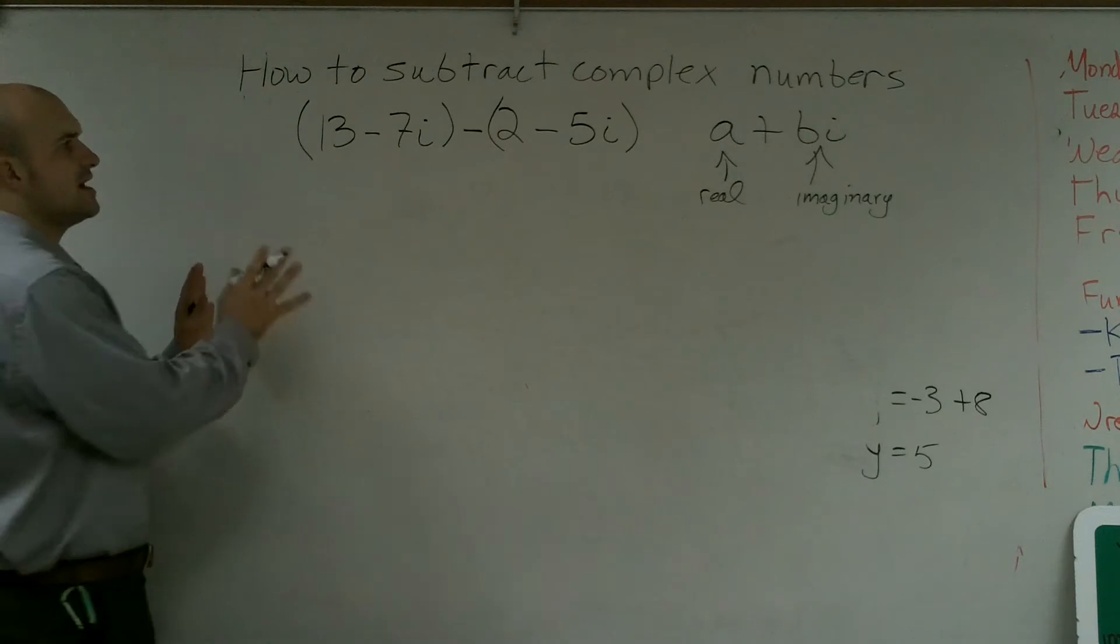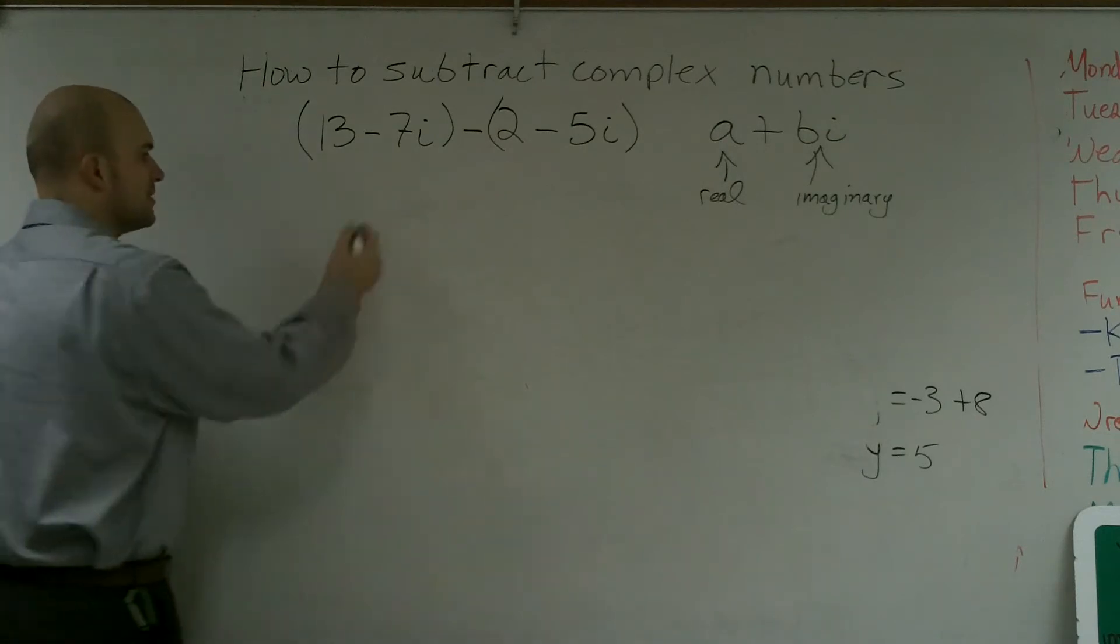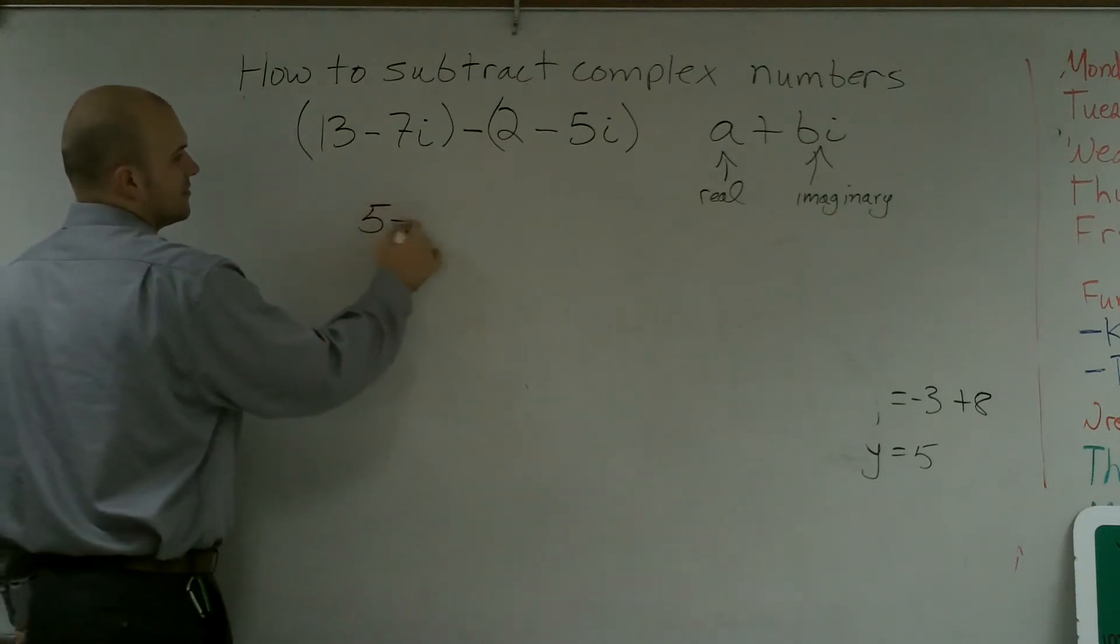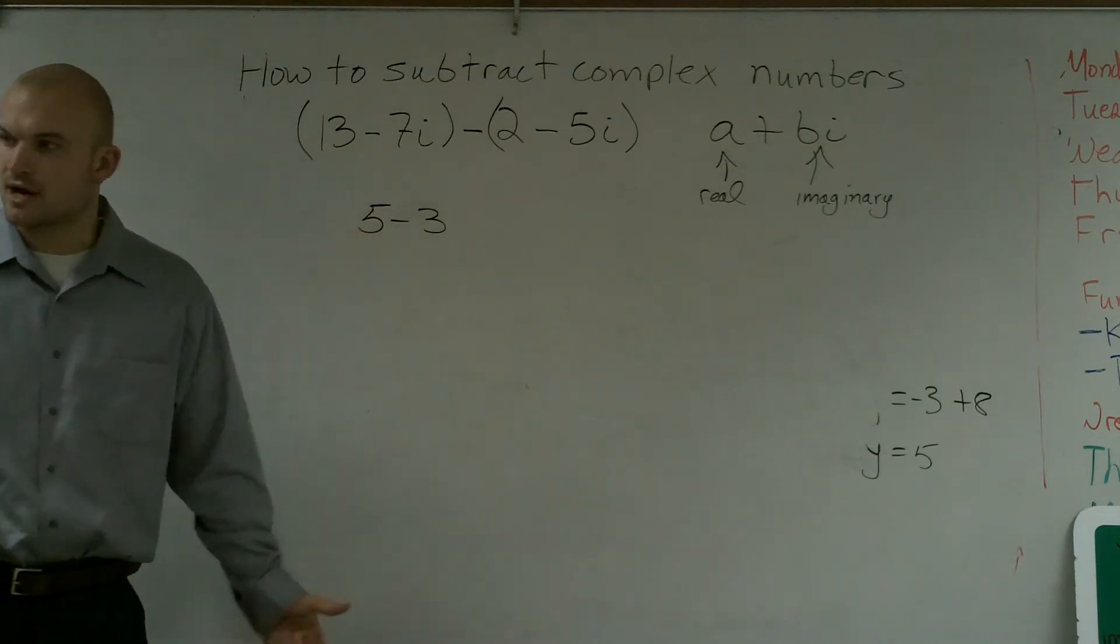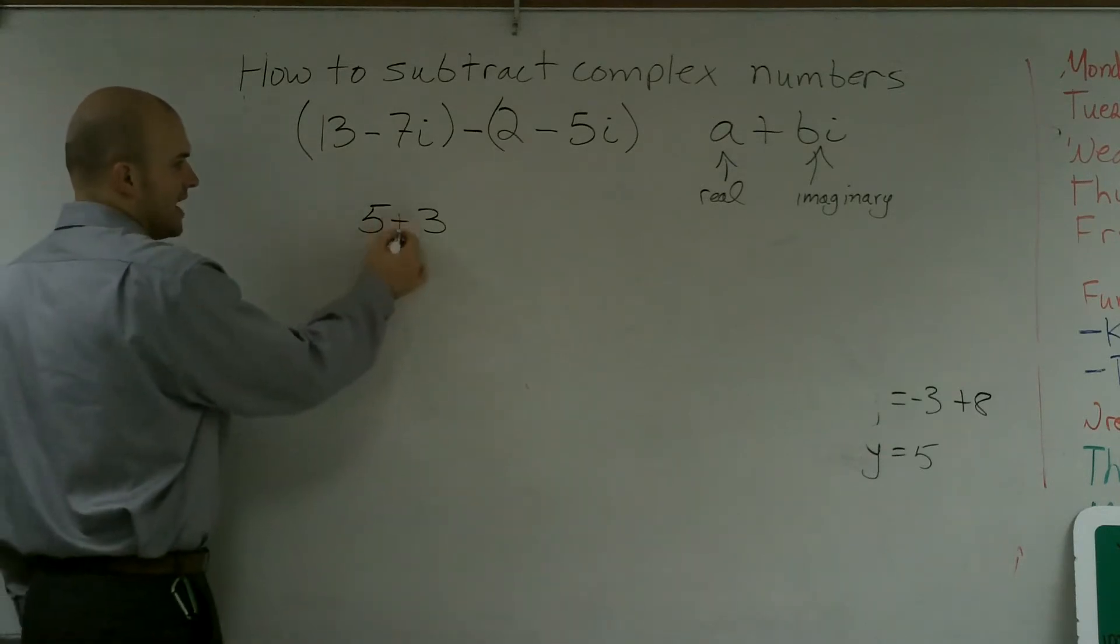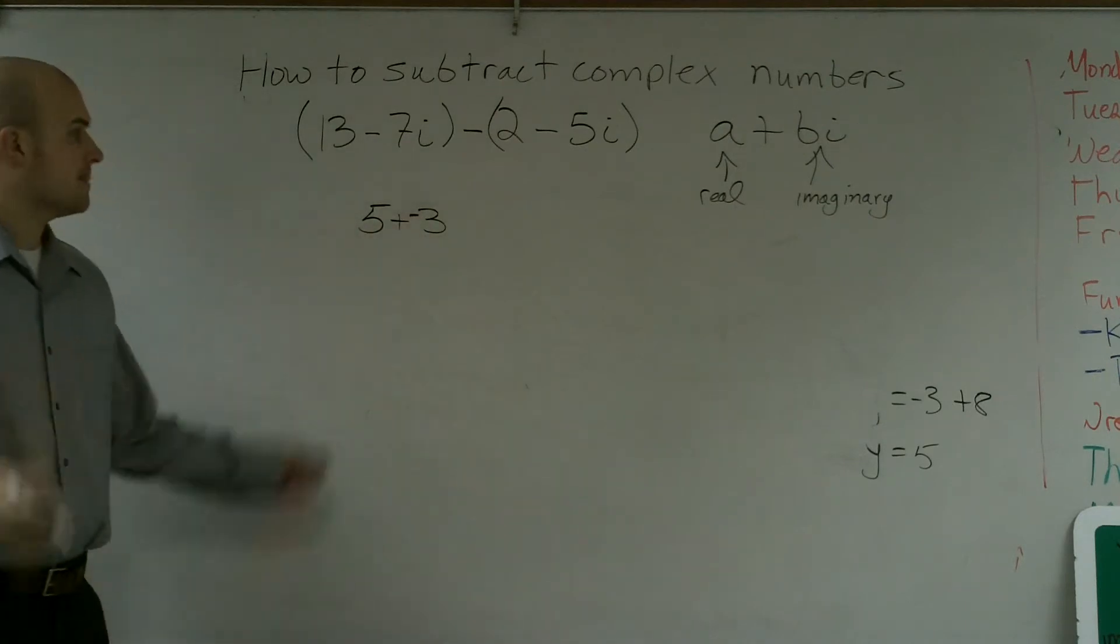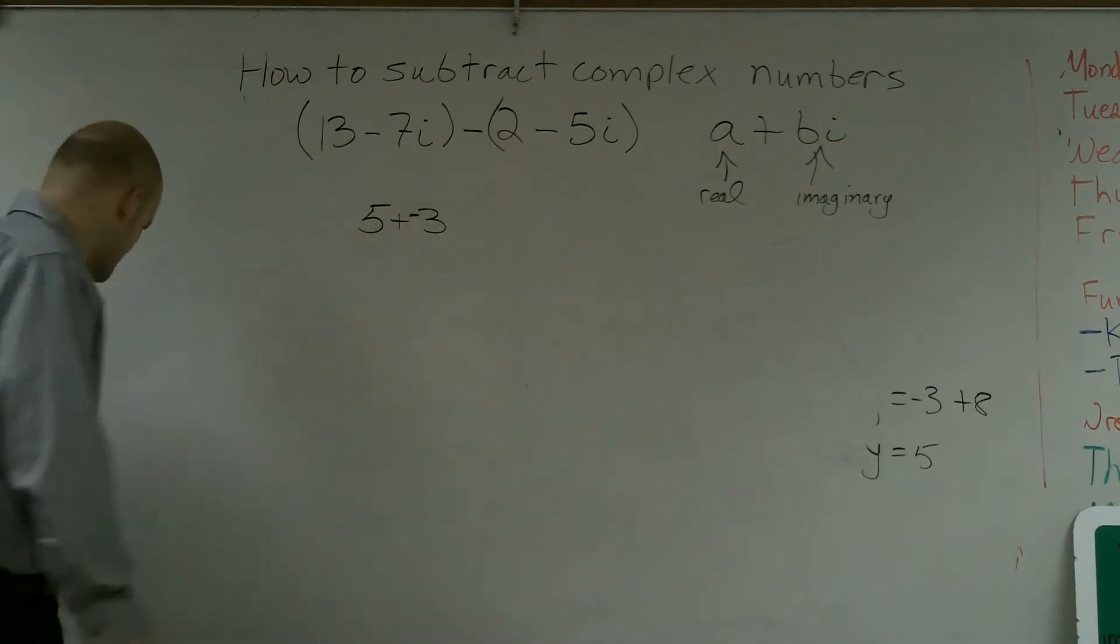So when subtracting complex numbers, one thing to remember is you can always change a subtraction problem to an addition problem. That means you add and make that a negative. 5 plus a negative 3, we know it's going to be positive 2.